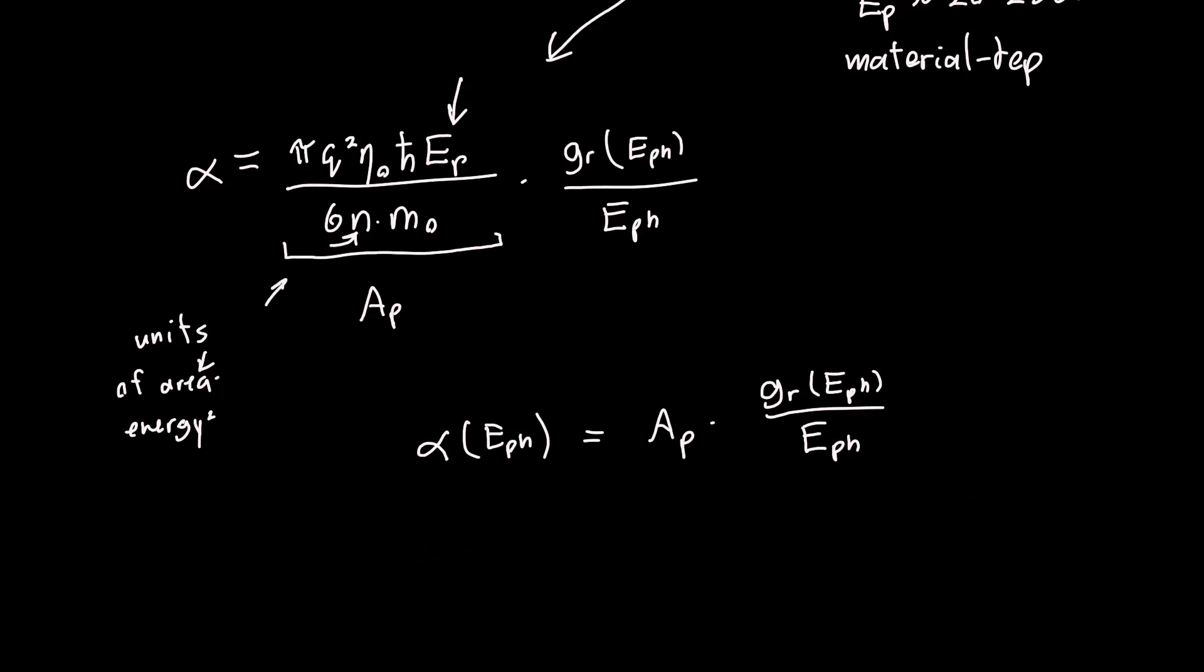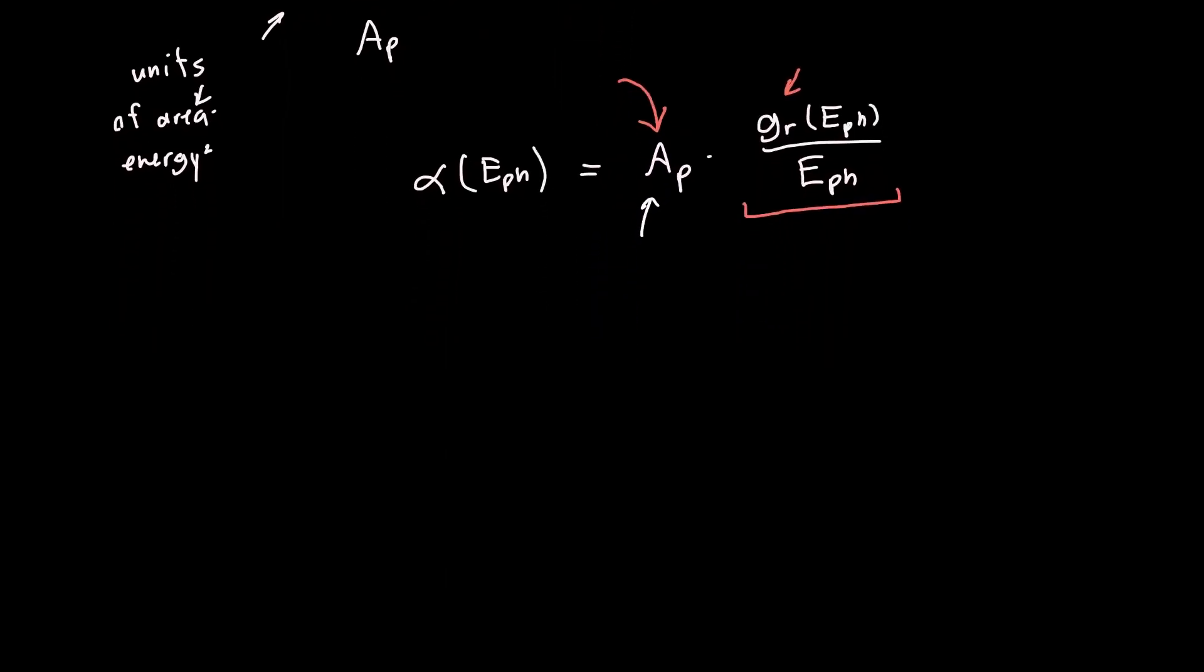The beauty of this is that all of our material dependence is in A_p and in the density of states, because the density of states has an effective mass term. But all of the photon energy dependence is just carried in this term. So if we were to plot this out, we don't even need to know what A_p is to generate a plot. We can predict what the absorption spectra looks like.